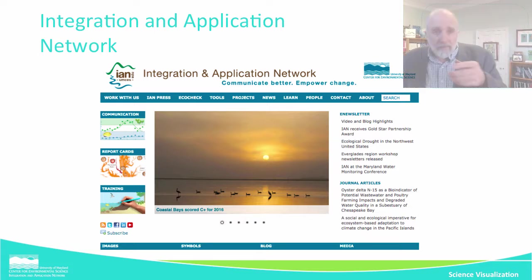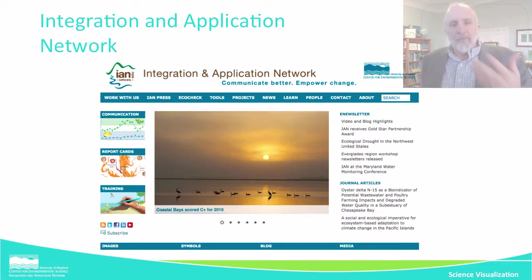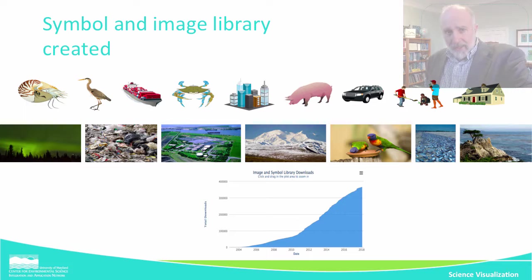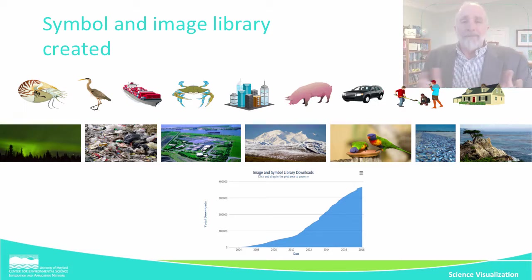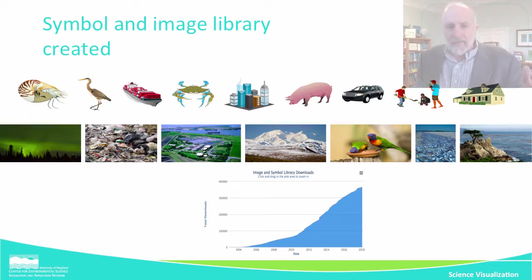In 2002 I came to the University of Maryland Center for Environmental Science to start up the Integration and Application Network. You can see from our webpage the four words: communicate better, empower change. Our philosophy is that by being better science communicators, we can create positive environmental change. One of the tools we developed pretty early on, around 2005, is the symbol and image library. We gathered all these vector symbols we were creating in Adobe Illustrator and collected them into a library to share with other people, along with a collection of images. That really took off — almost 350,000 downloads to date.